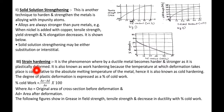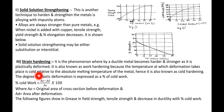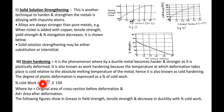Strain hardening is the phenomenon whereby a ductile metal becomes harder and stronger as it is plastically deformed. It is also known as work hardening, and because the deformation takes place at temperatures cold relative to the absolute melting temperature, it is also called cold hardening. Percentage cold work is calculated as: (A0 minus Ad) divided by A0, times 100, where A0 is the original cross-sectional area and Ad is the area after deformation.